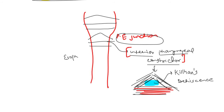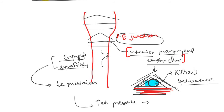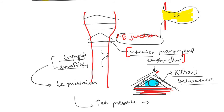If there is esophageal dysmotility — decreased esophageal peristalsis — pressure within the esophagus increases. This increased pressure forces the mucosa and submucosa to protrude through Killian's dehiscence, producing a diverticulum between the thyropharyngeus and cricopharyngeus parts — this is Zenker's diverticulum.